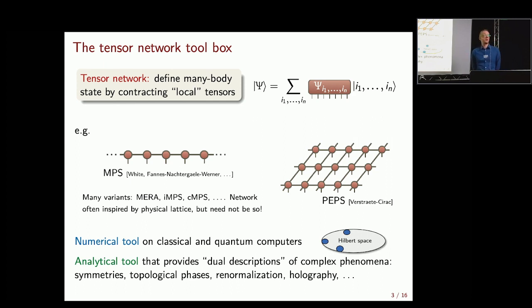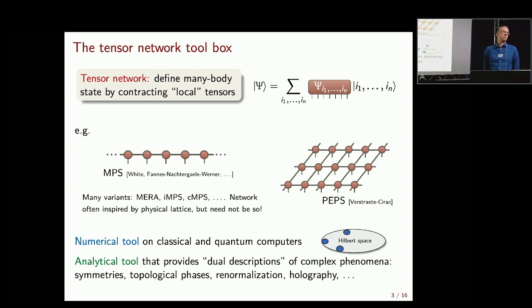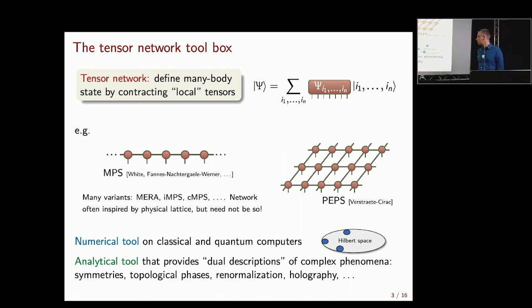As a theorist, I find it exciting that tensor networks provide an analytical framework and language to study complex quantum phenomena. For example, one can study symmetries in interesting ways. People have successfully used this framework to think about topological phases. The MERA network is connected to ideas like renormalization and holography — one approach to thinking about things like black hole and high-energy theory phenomena.